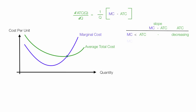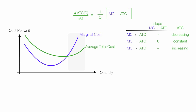At this point, marginal cost is equal to average total cost. Of course this equals zero — marginal cost minus average total cost equals zero — so average total cost is constant: flat-line slope. Then marginal cost is greater than average total cost, the slope is positive, and average total cost is increasing.